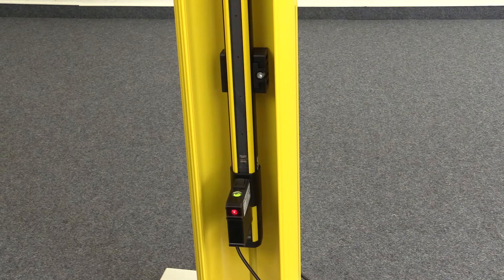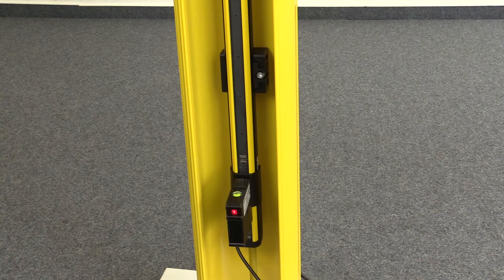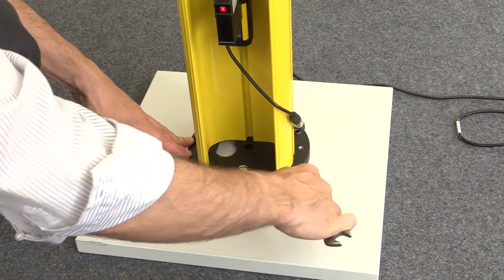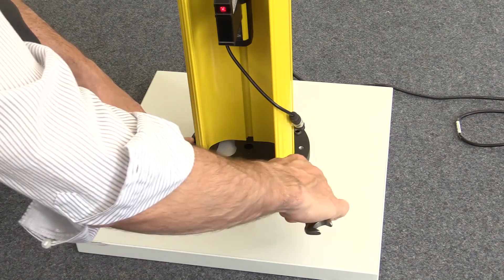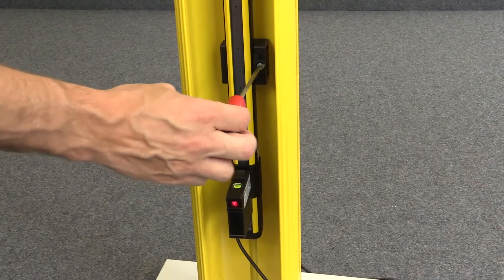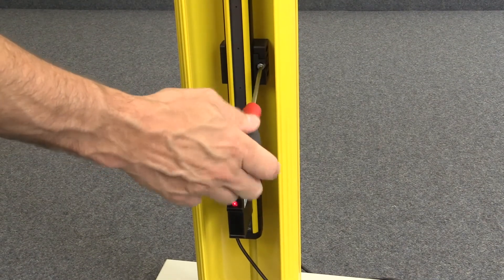The DTEM sender is now well aligned. The column can be fixed on the floor and the brackets can also be closed.